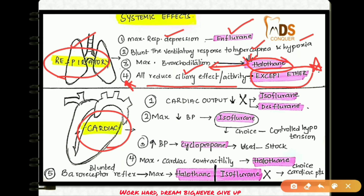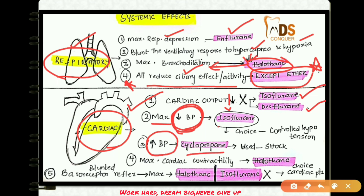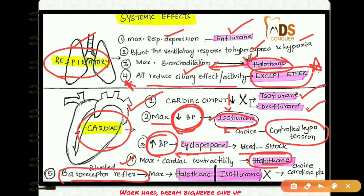For cardiac effects, all inhalational agents decrease cardiac output except two drugs: isoflurane and desflurane. The drug that decreases blood pressure by the maximum amount is isoflurane, whereas cyclopropane increases blood pressure. Therefore, isoflurane is the choice in controlled hypotension, while cyclopropane is used in patients with shock. Maximum cardiac contractility decrease is seen with halothane. The baroreceptor reflex is blunted maximally with halothane and is not affected by isoflurane.